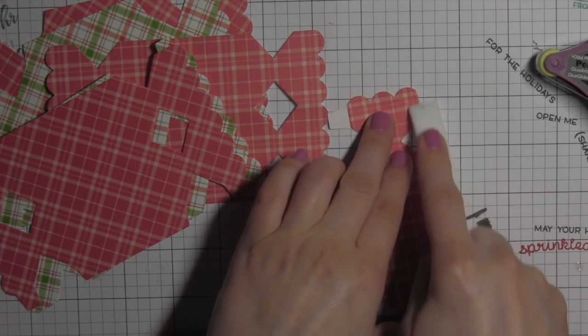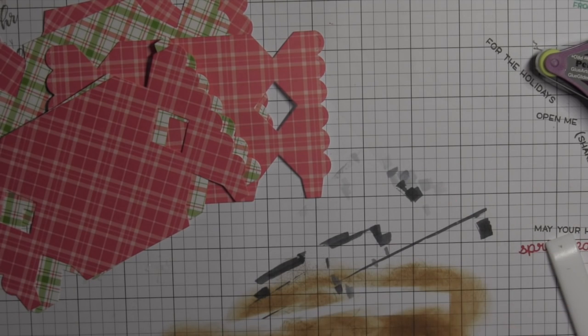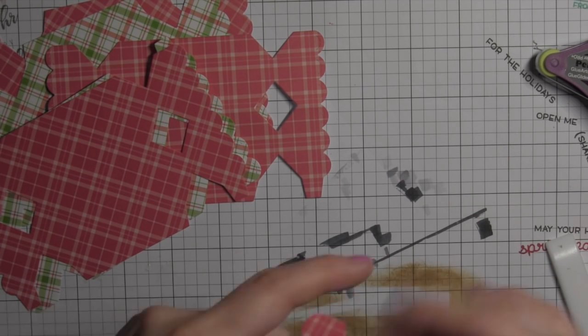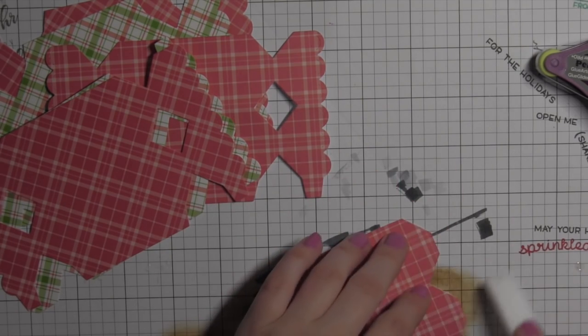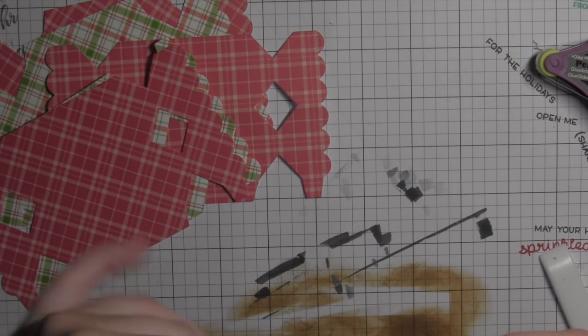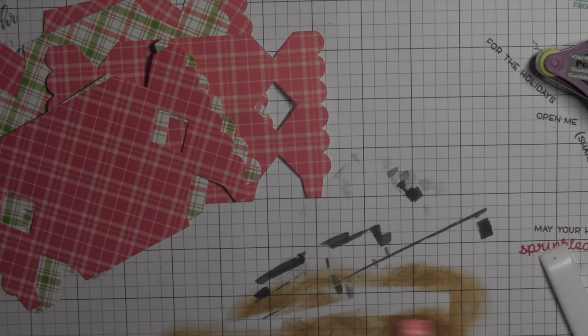After you die cut all of the pieces—and you're going to need two per pattern to create a box—I like to fold it on the score lines and then use a bone folder to get that crease nice and crisp.